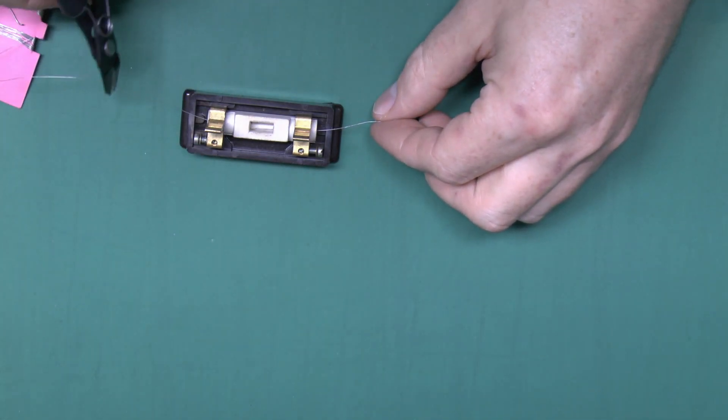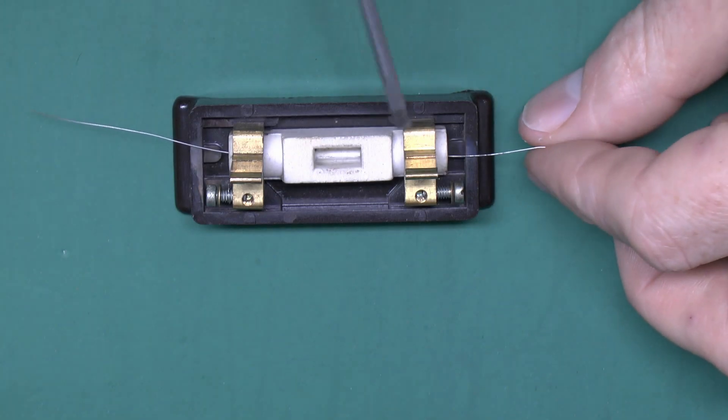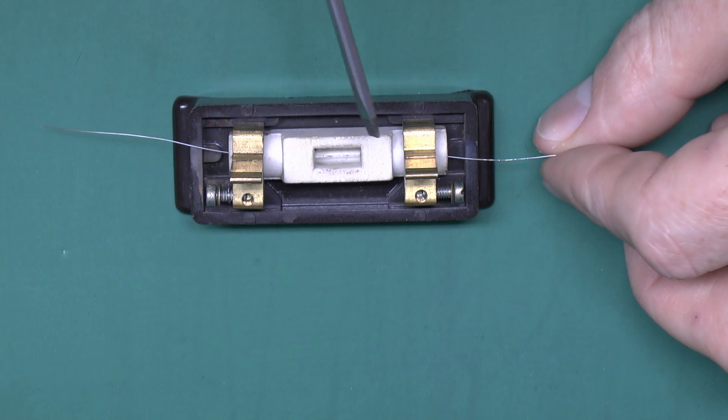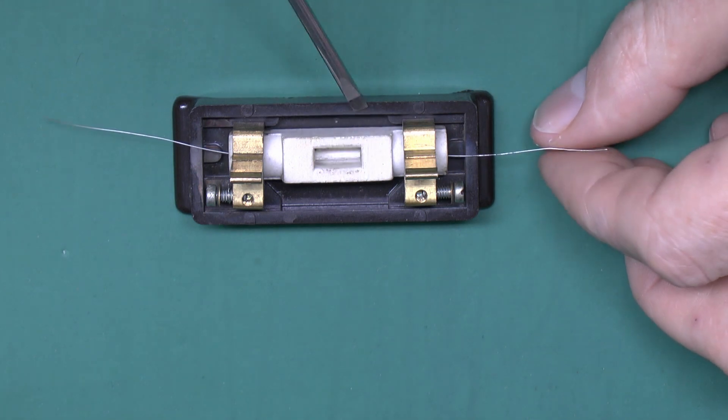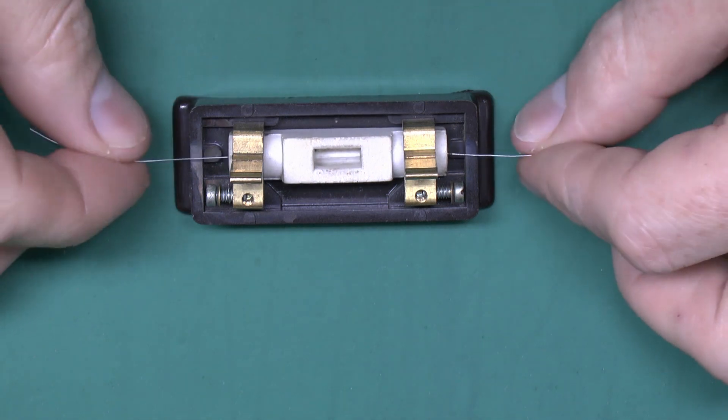Now we can trim that off to a moderate length there. It's important to make sure the wire does actually go right through the center of the ceramic piece and it doesn't actually go around the outside. I've seen these wired in all kinds of ridiculous fashion. So just through the center there.